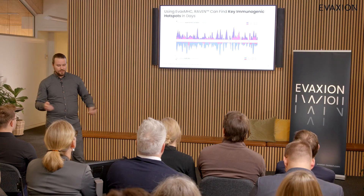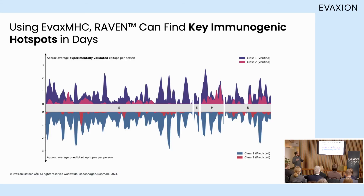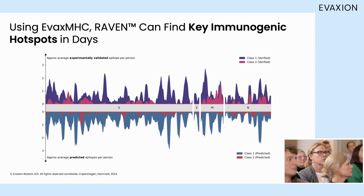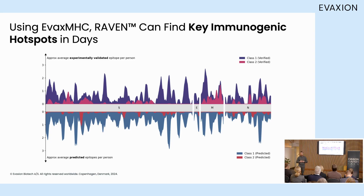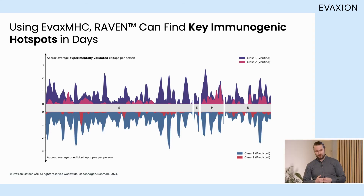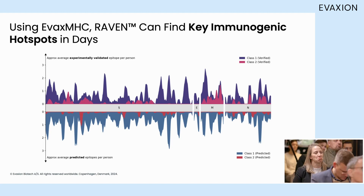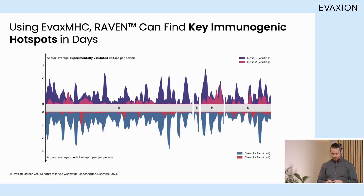We have looked at this in hindsight using 2020 SARS-CoV-2 data. The peaks going up show what researchers discovered experimentally, and the peaks going down show the predictions we made on day one of the pandemic. They line up quite nicely. It took at least eight months to find the experimentally confirmed peaks, and it took us a day to find the predicted ones. It really is a fast-response platform — that is how we initially designed it.